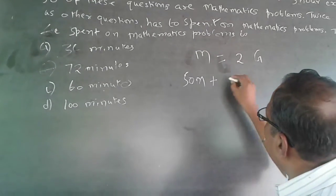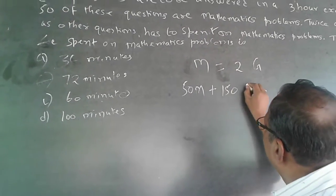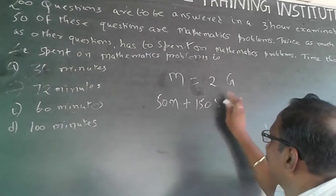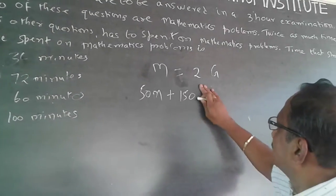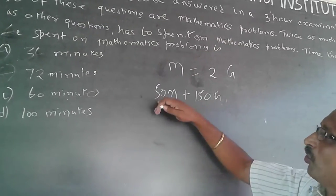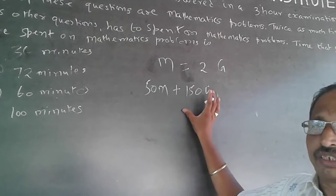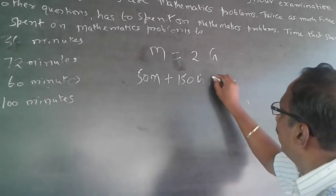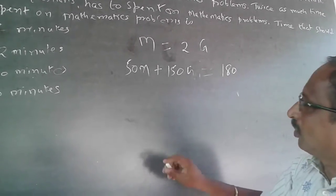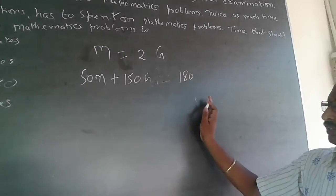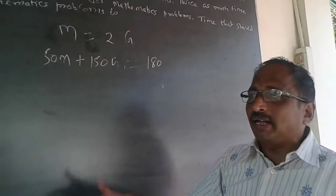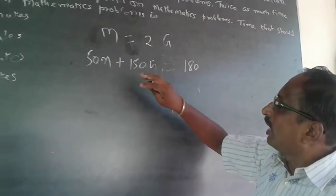Plus 150 into g, because there are totally 200 questions — 50 go for math, and 150 will go for general questions. Total time is three hours, which I'll convert to 180 minutes. So the equation is: 50m + 150g = 180. Now my main concern is the math questions, so I'll convert g as m divided by 2.